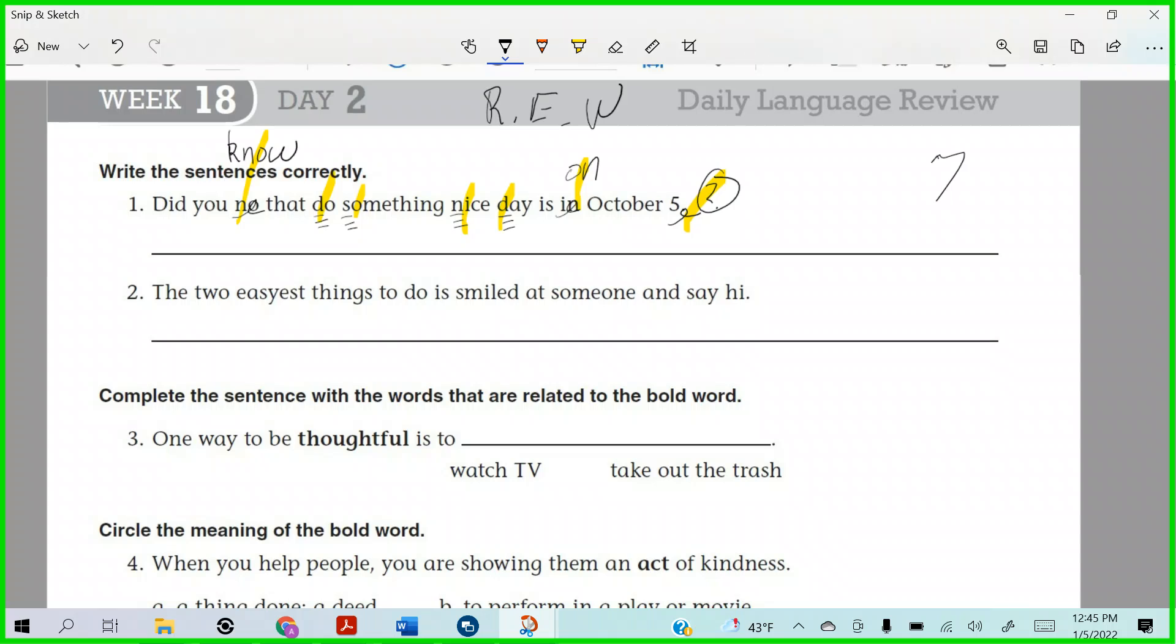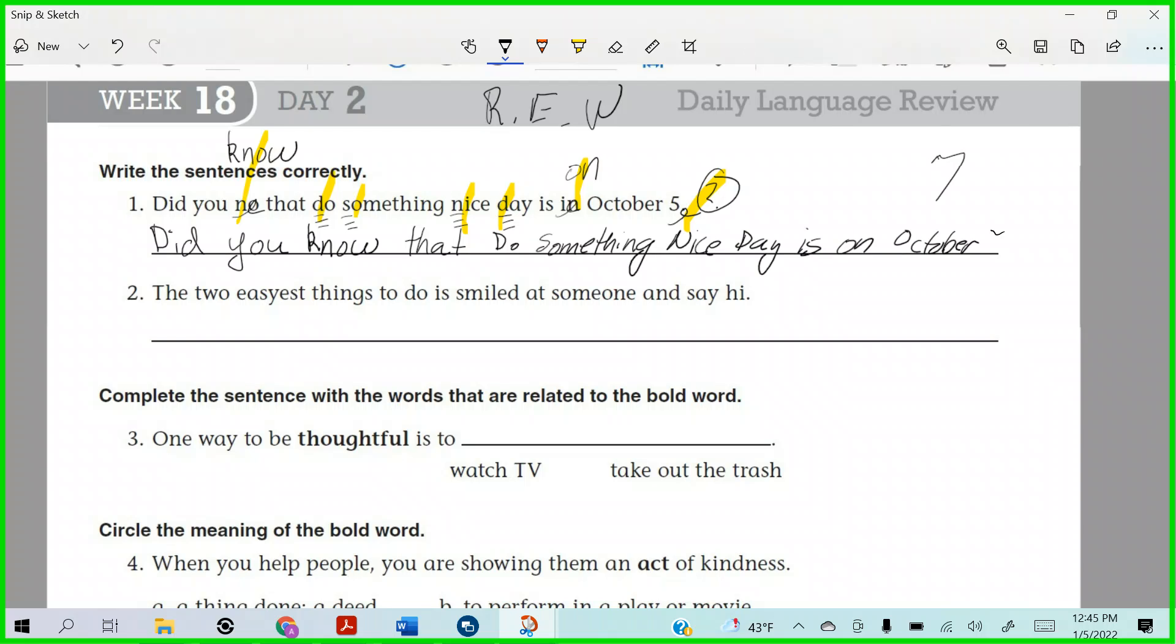Alright, so then your next phase of this little process, you would do what? You got to write it. So the key is, did you, you got to remember to translate your corrections down to your writing, right? Do something nice day is on October 5th, question mark, right? There it is. So read, edit, write.